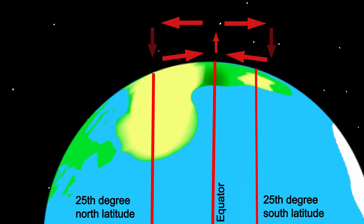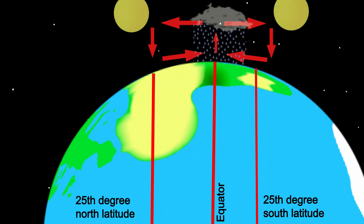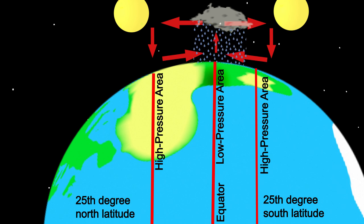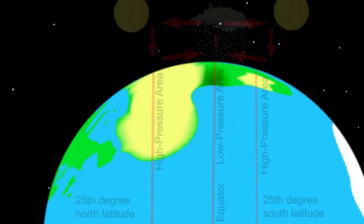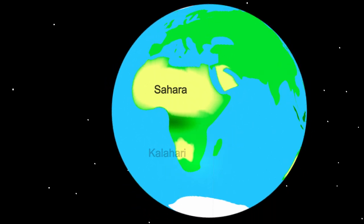The air sinks again around the 25th degree of latitude. There is little water vapor left in the air because it has already rained. Because the air drops, the air gets warmer so that the remaining water vapor does not condense. It does not rain frequently around these areas. It is therefore no wonder that the largest deserts are located around the 25th latitude.